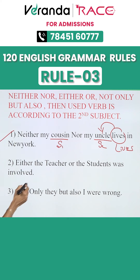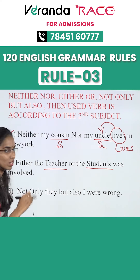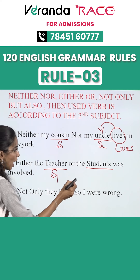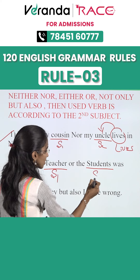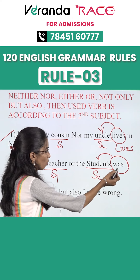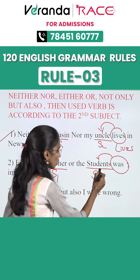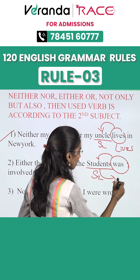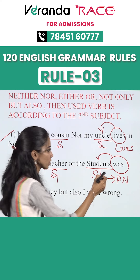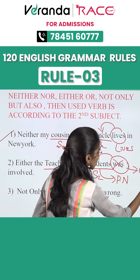The next one is: either the teacher or the students was involved. Teacher is subject 1 and students is subject 2. According to the rule, the verb depends on subject 2. Here we are using a plural noun — students. So instead of using 'was', we have to use 'were'.